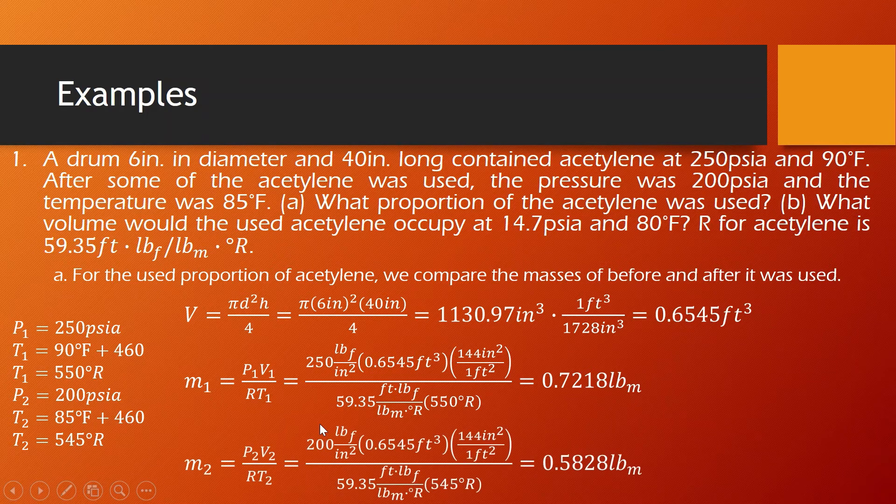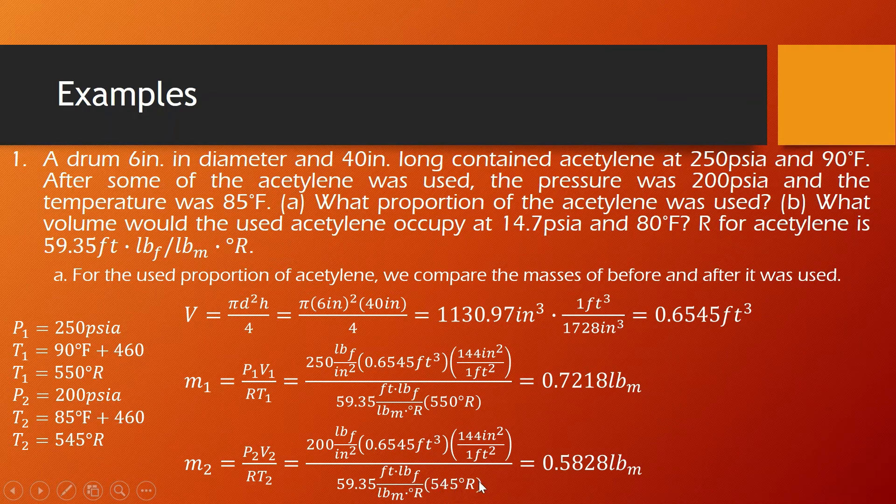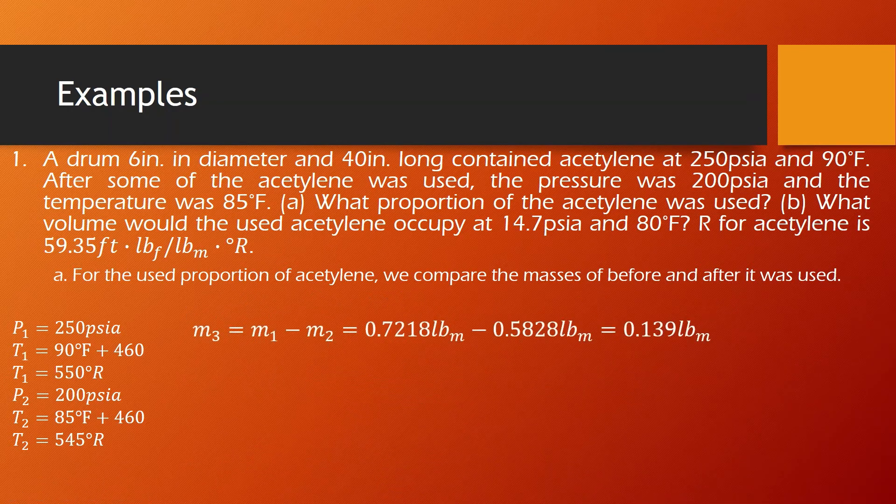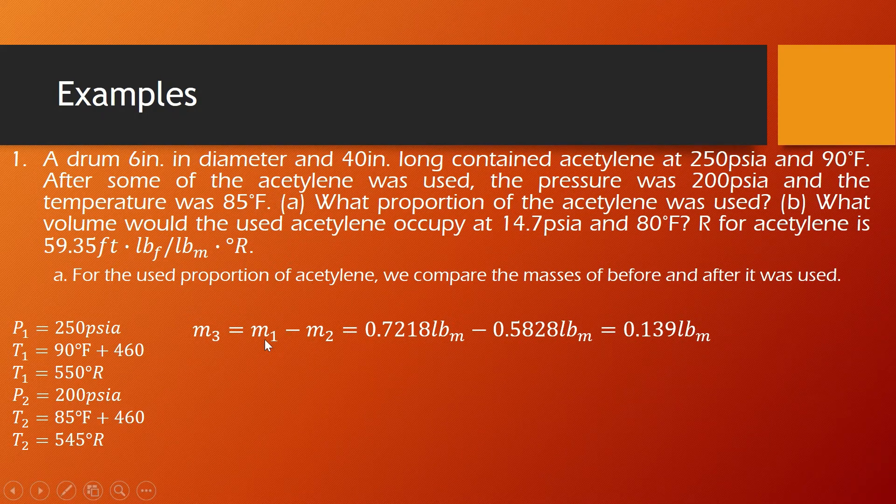For the second mass, using the same formula, our pressure differs at 200 psi and then our temperature is 545 degree Rankine. So our second mass is 0.5828 pound mass.